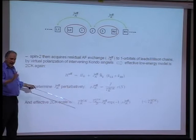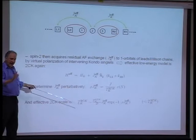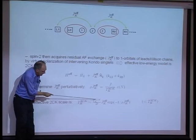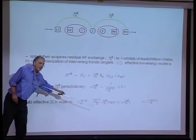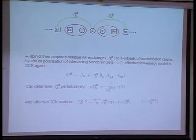In that case, the effective two-channel Kondo scale is given by J-tilde effective times e to the minus one over rho times J-tilde effective, times the factor which is the one-channel Kondo scale divided by the bandwidth D. The presence of that factor — which is very small — reflects the fact that it's not until you've shrunk the bandwidth to an effective scale of the one-channel Kondo scale that the two-channel effective Kondo model is itself applicable.